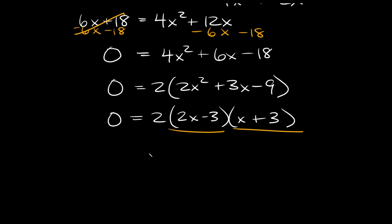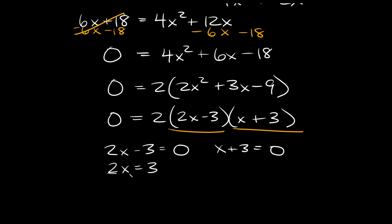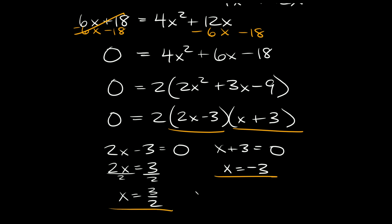Setting each factor equal to 0: 2x minus 3 equals 0 gives x equals 3 halves, and x plus 3 equals 0 gives x equals negative 3. These are our two answers. Checking for extraneous solutions: x equals 3 halves is a true solution, but x equals negative 3 is the extraneous solution — so that one is not actually a valid answer.